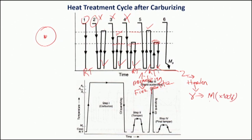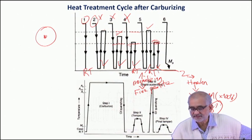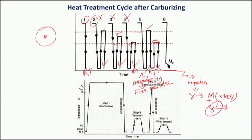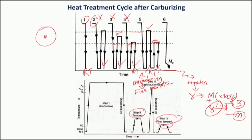Retained austenite is not conducive for dimensional accuracy because during heat treatment or subsequent use, due to mechanical activation, this retained austenite can convert either into bainite or into martensite depending on the path it follows. In either case there is a possibility of expansion or contraction — volume change — which means it may develop cracks on the surface, which is undesirable. After the final quenching, we actually carry out tempering to convert part of the martensite into tempered martensite, and then we do a final tempering at a lower temperature which is only for stress relieving.